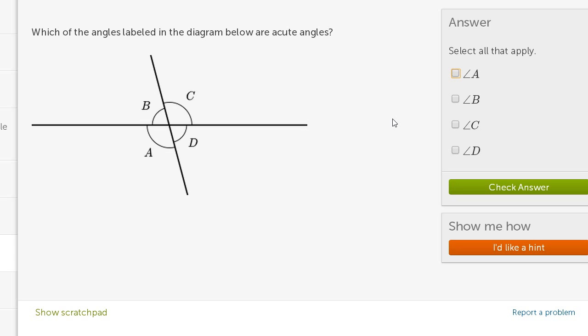Which of the angles labeled in the diagram below are acute angles? So just as a reminder, an acute angle is less than 90 degrees. So let's see.